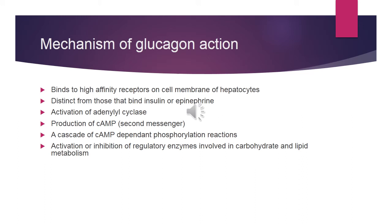Now, the mechanism of glucagon action. The mechanism is different from that of insulin. Glucagon binds to high-affinity receptors on the cell membrane of hepatocytes — liver cells. These receptors are distinct from those that bind insulin and epinephrine. The activation involves the enzyme adenylyl cyclase, which produces cyclic AMP. Cyclic AMP acts as a second messenger, and a cascade of cyclic AMP-dependent phosphorylation reactions produces regulatory enzymes that are activated — important in carbohydrate and lipid metabolism.